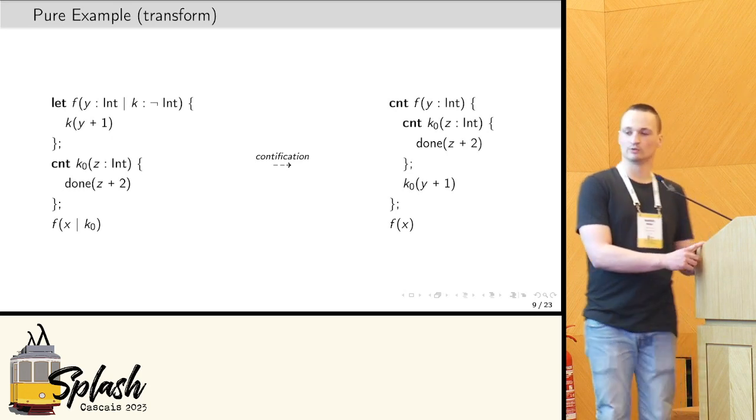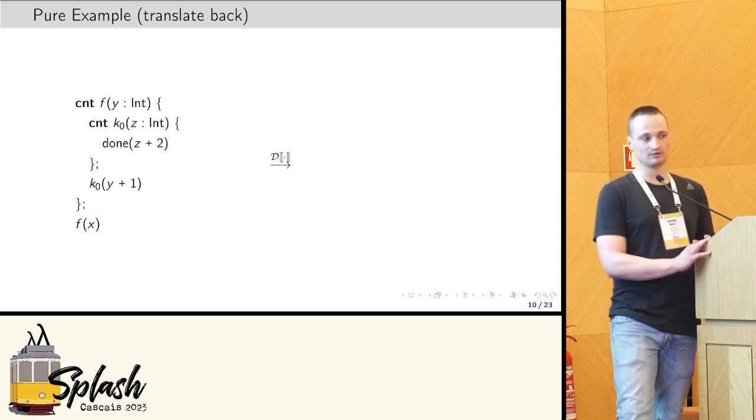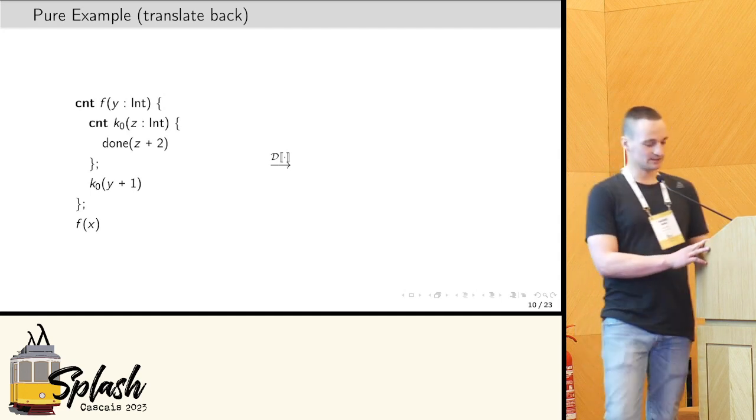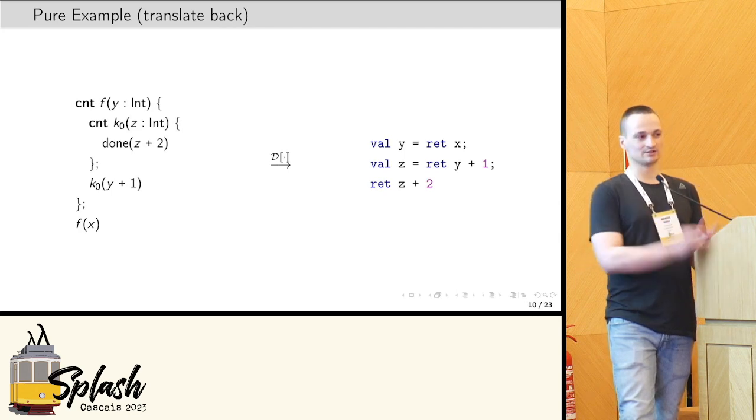Resulting in the program on the right, where f has now become a continuation, hence the name quantification. So now translating this program back to direct style actually results in the program on the right here, and as you can see also in direct style, the function f is completely gone.